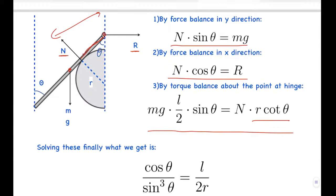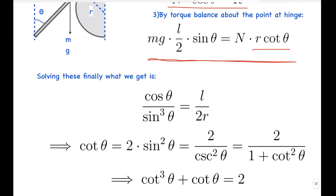Solving these finally, what we can get is substituting N equals to Mg by sin theta in the third equation. And simplifying what we get is cos theta by sin cube theta equals to L over 2R.